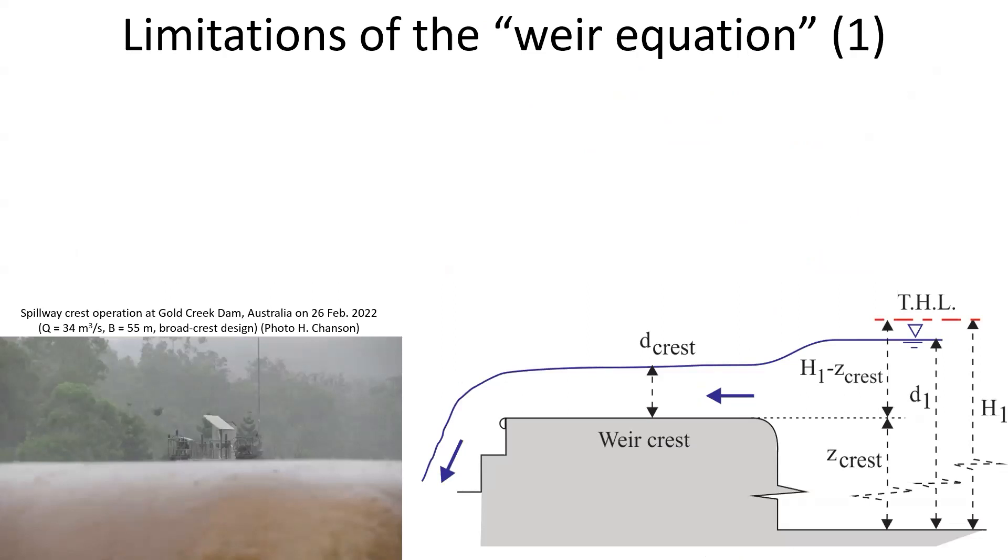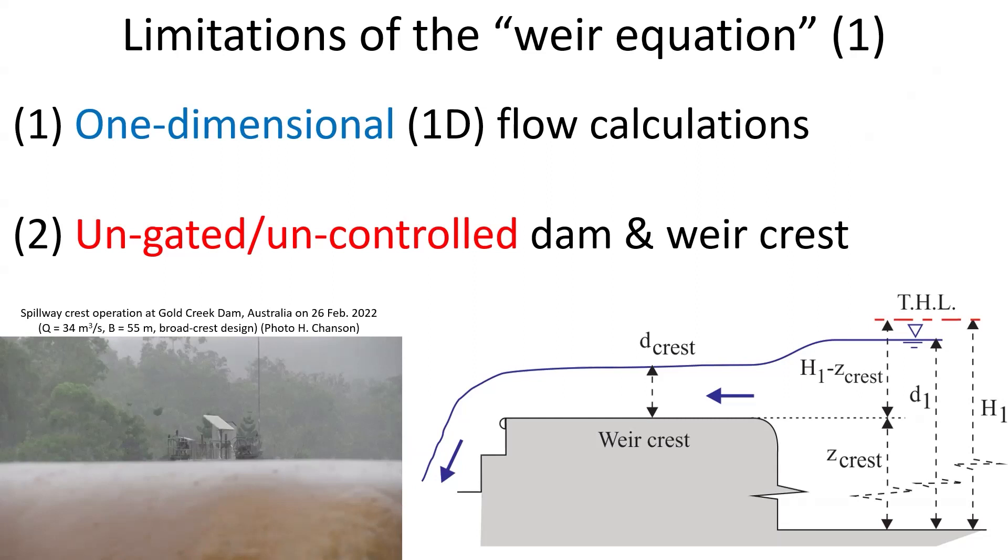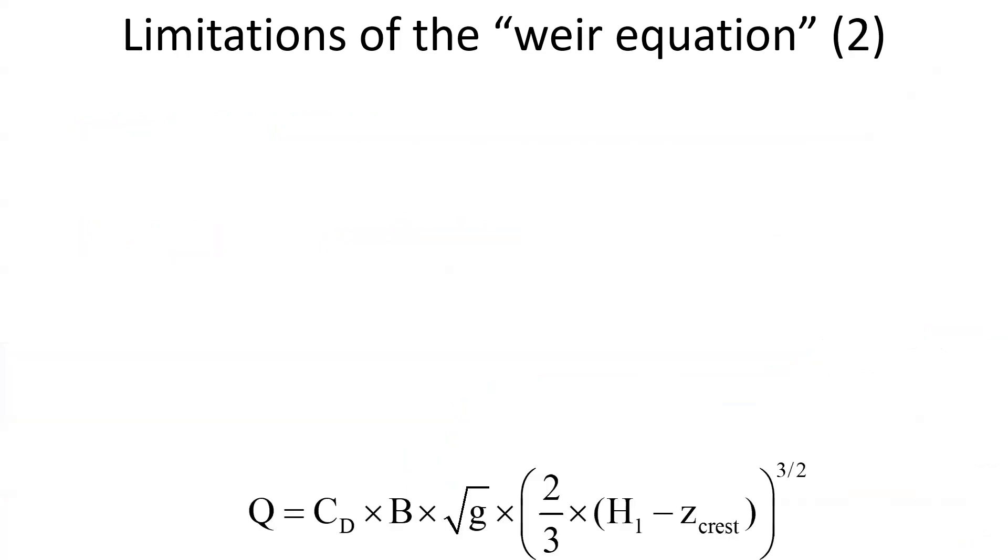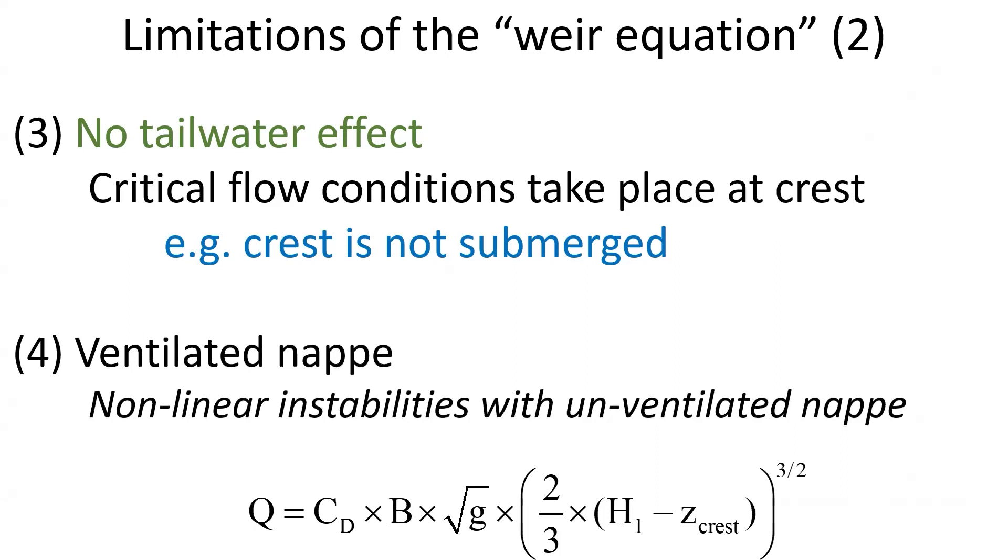Importantly, the weir equation is derived within some very strict assumptions. We assume a one-dimensional flow. The dam or weir crest is ungated and uncontrolled; in presence of a gate, the equations are very different. There is no tailwater effect, that is, critical flow conditions take place at the crest and the downstream flow condition does not impact the crest operation. And lastly, the nappe is ventilated, as nonlinearities and instabilities are known with an unventilated nappe.